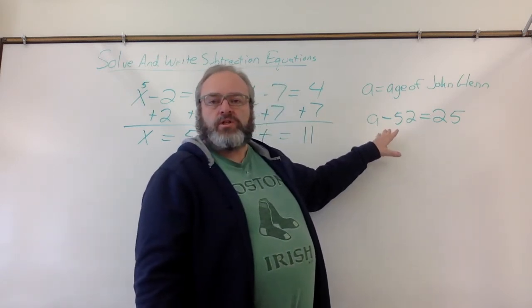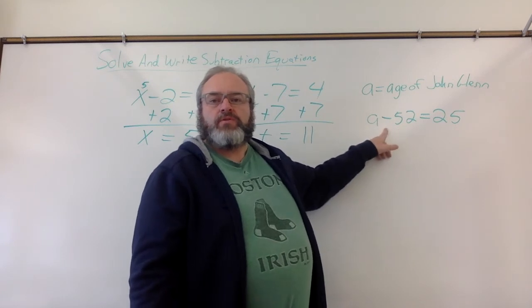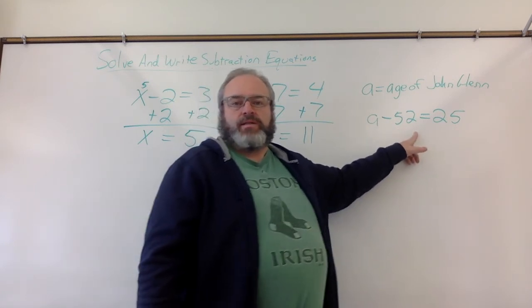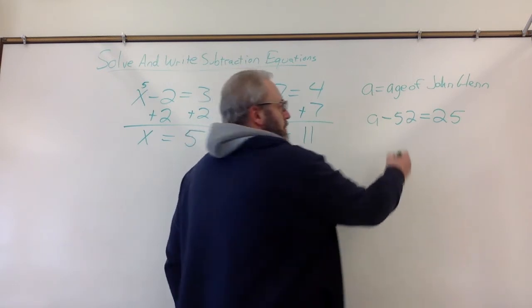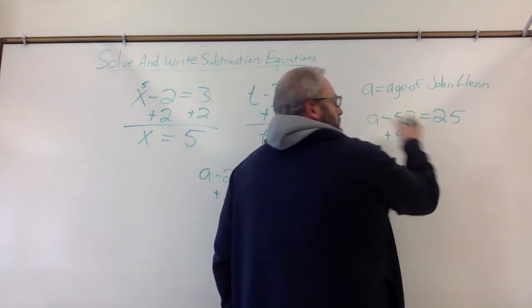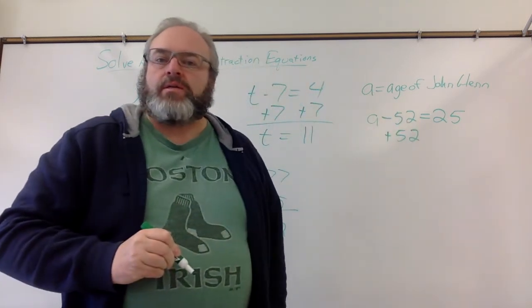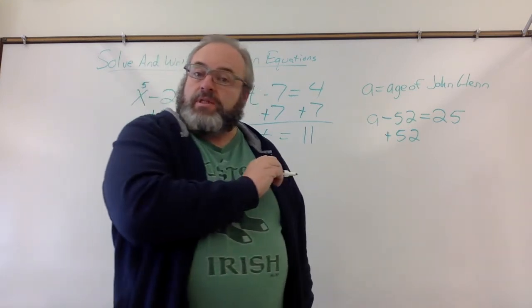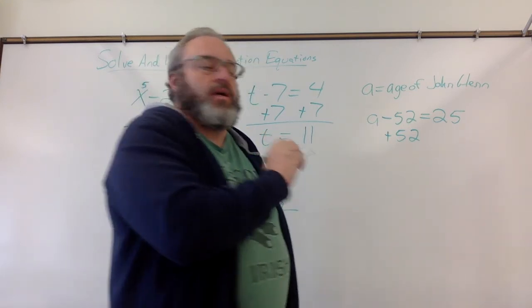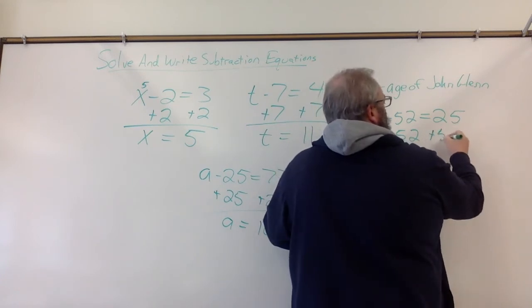Now, how do we solve that? We've got our equation. That's the first step. Now, how do we solve it? We have to do the opposite of subtracting 52. That's right. I heard somebody say that. It's adding 52. What do we have to do to the other side? Exactly. Add 52.